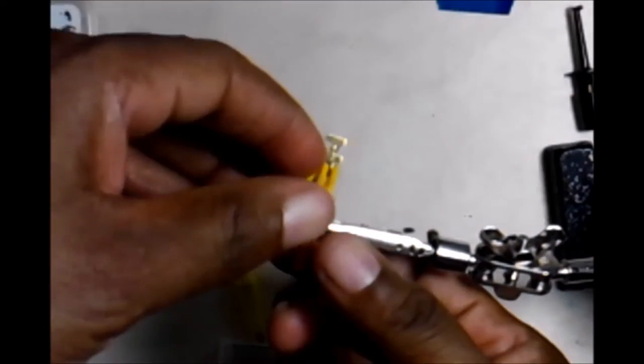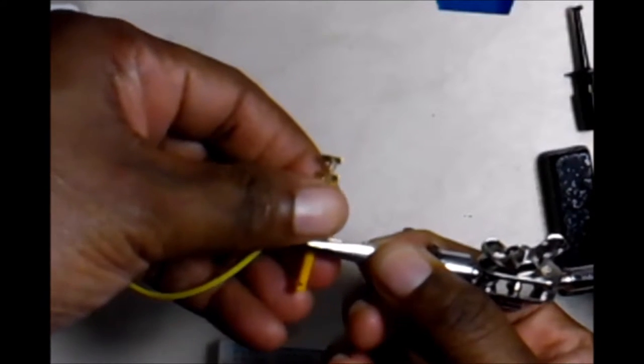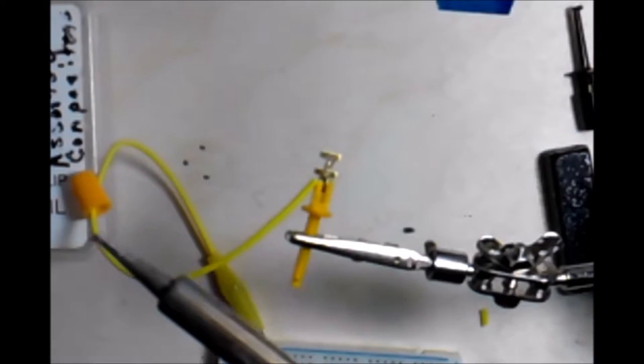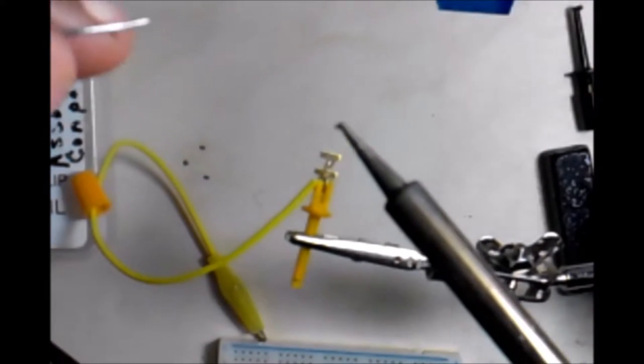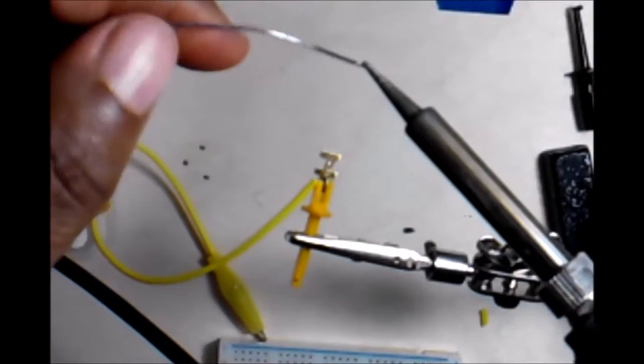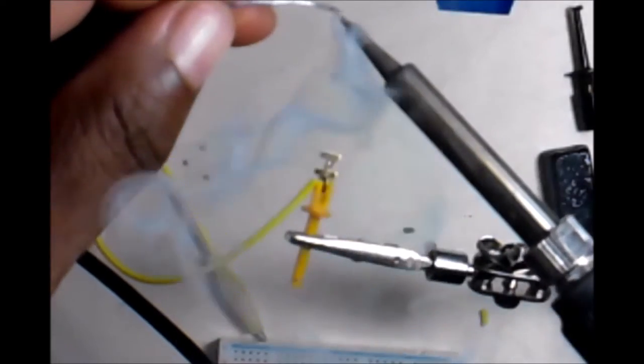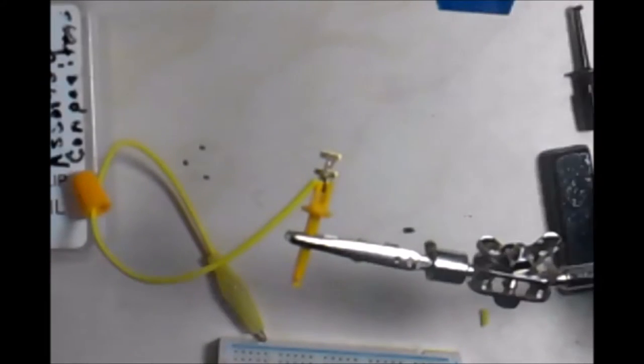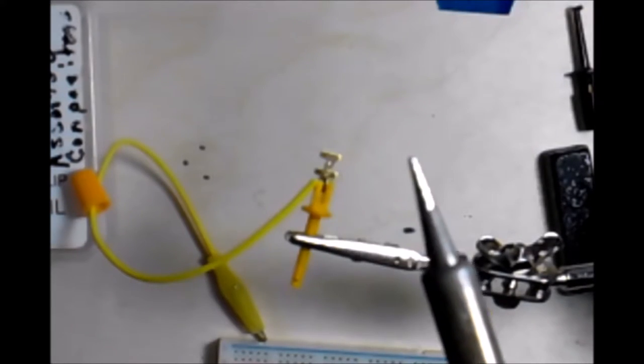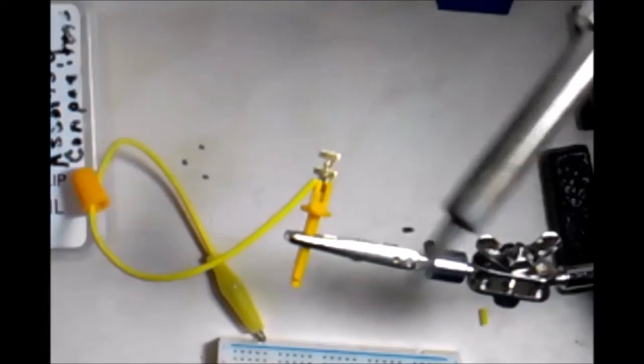With the solder, you want to tin the iron before you start. Tinning the iron means you want to take your solder and hit your solder and iron tip with it a little bit. You want to pop it inside that Brillo wire a couple times, as you can see it came out very silver. That's tinning it.